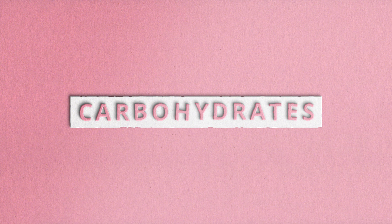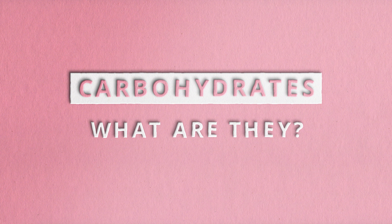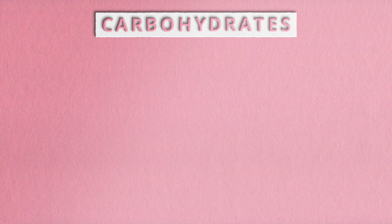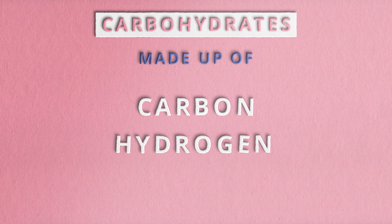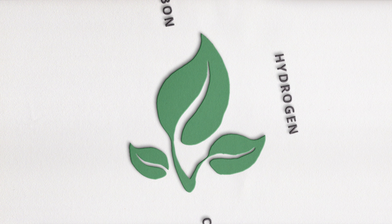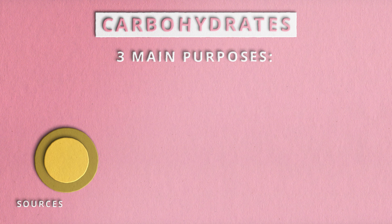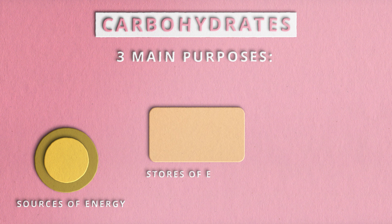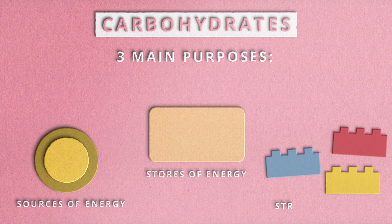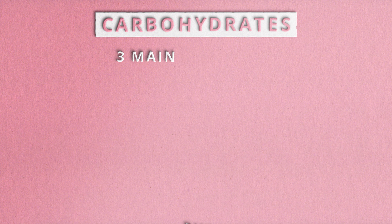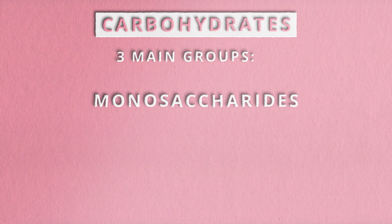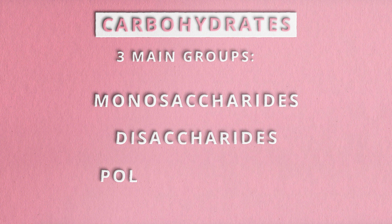Let's quickly describe what carbohydrates are and how they are related to disaccharides. Carbohydrates are molecules made up of carbon, hydrogen, and oxygen — three elements which form the very foundation of life. Carbs serve three main purposes: as sources of energy, stores of energy, or as structural units. They can be divided into three main groups: monosaccharides, our friends disaccharides, and polysaccharides.